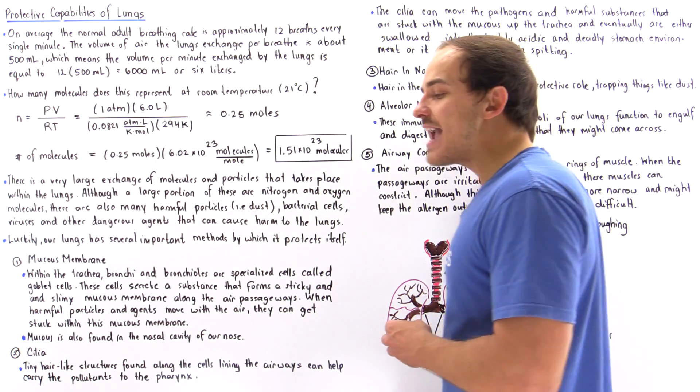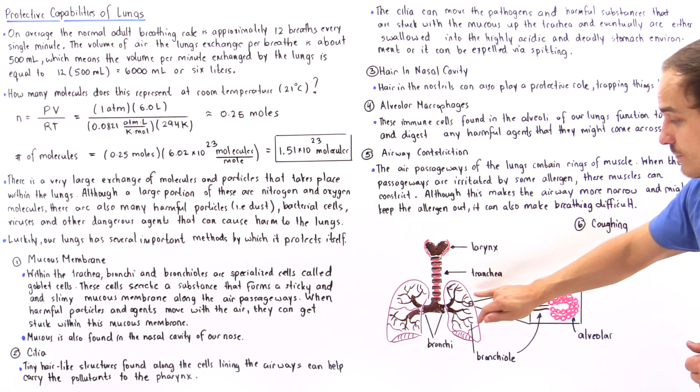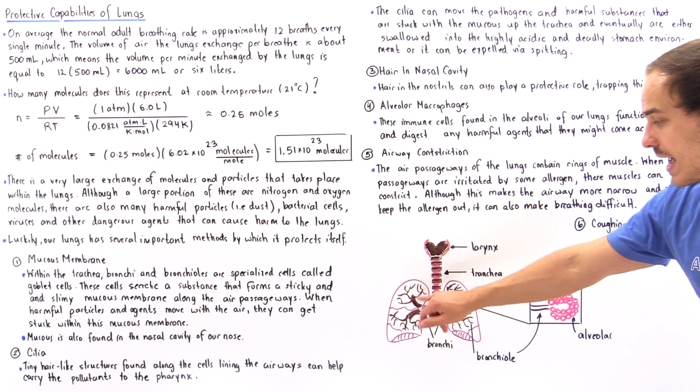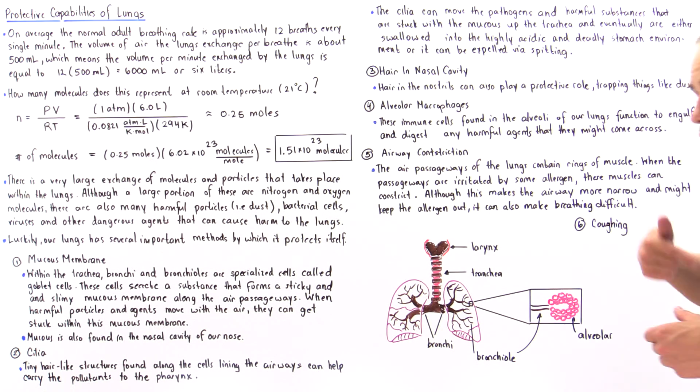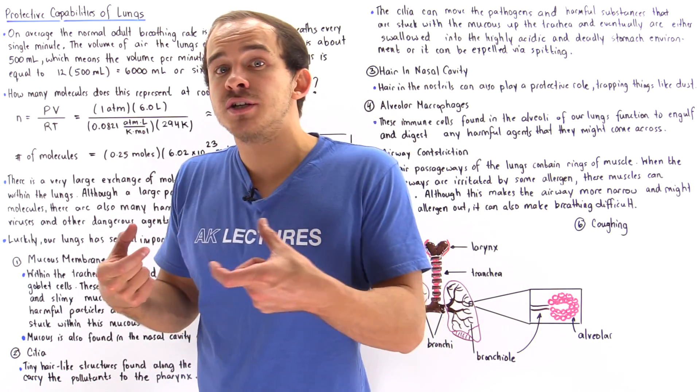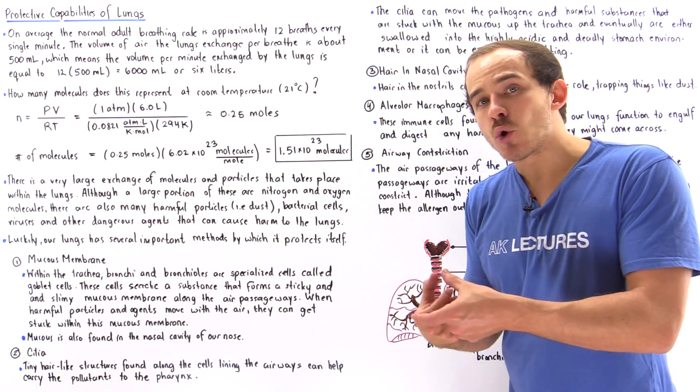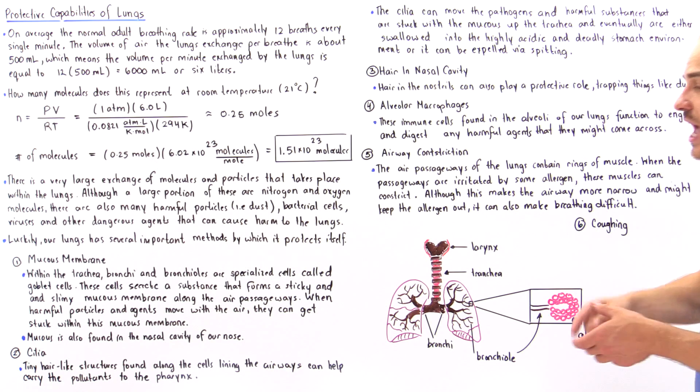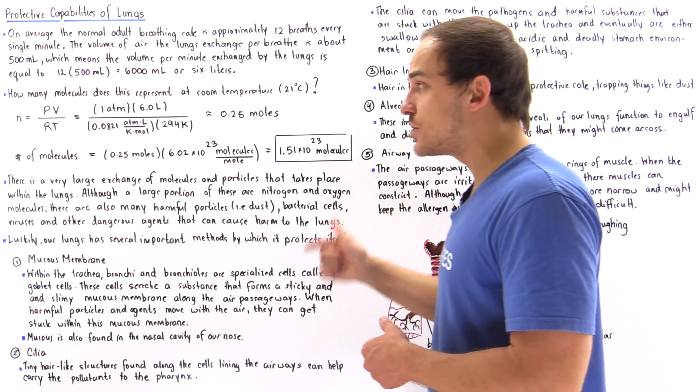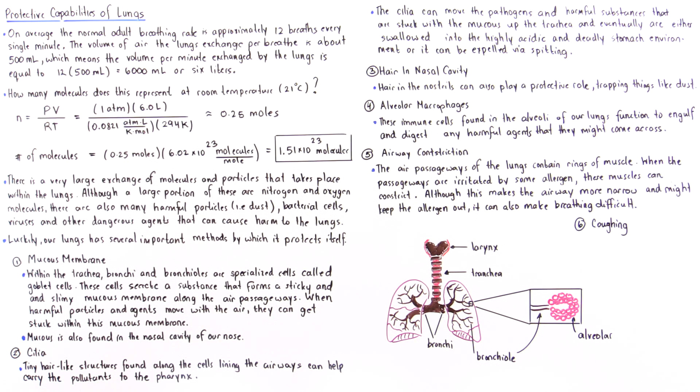We also have something called airway constriction. If we examine our air passageways—we have trachea, the bronchi, the bronchioles—these are lined with muscles. These muscles can constrict, and when they constrict they create a more narrow system of canals. That decreases the likelihood that our contaminant or harmful substance will pass into our body via our alveoli.